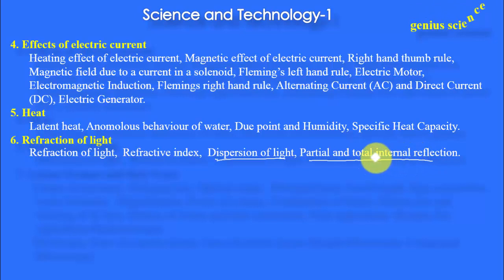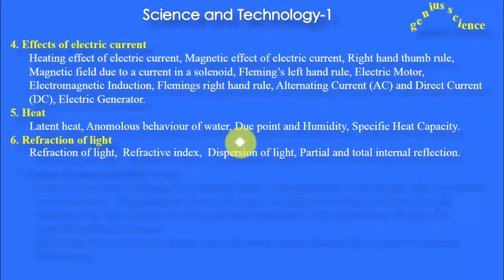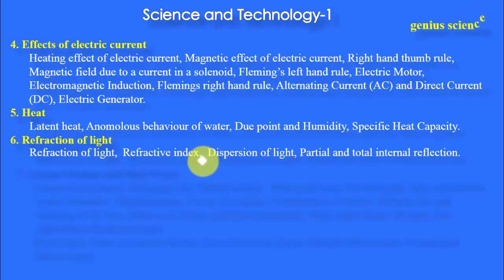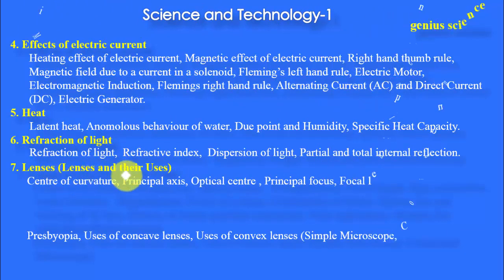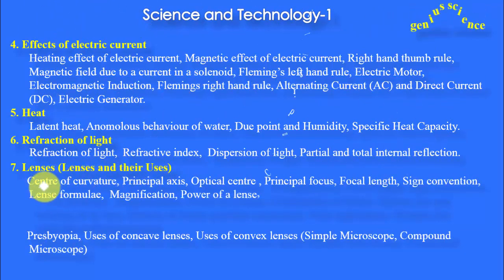Total internal reflection is useful for OFC — optical fiber cable. You know, on the side of roads there are many pipes buried, and inside those pipes there are small tubes passing through — those tubes are called OFC. The next chapter is Lenses and their uses.